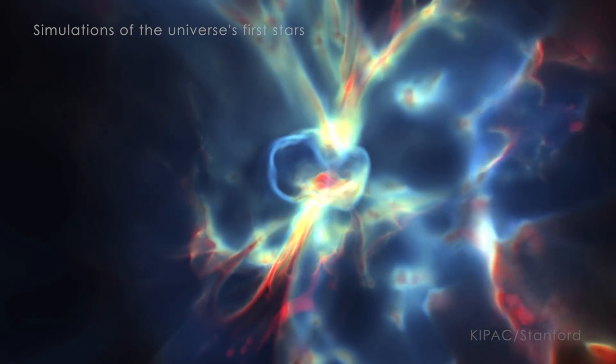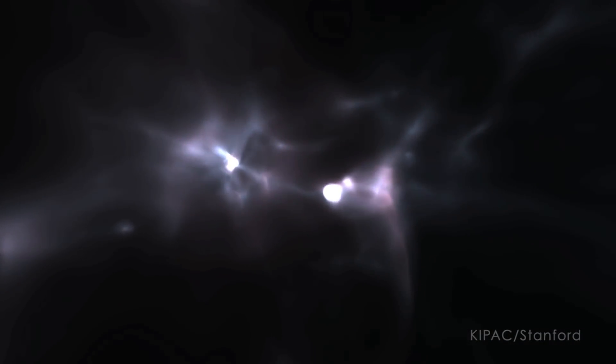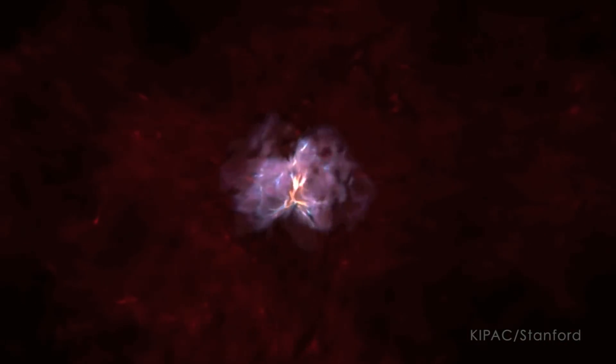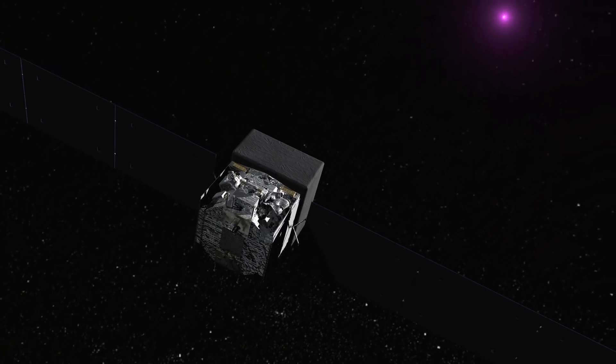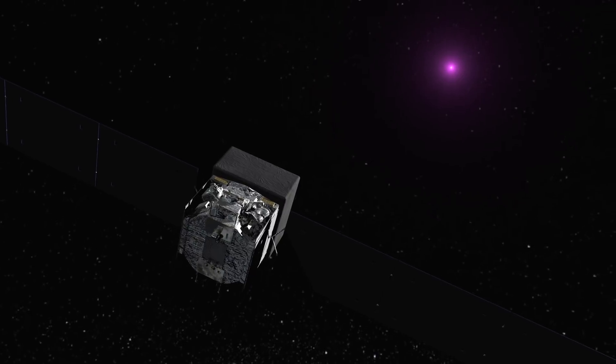Stars create most of the light in the universe, and many of its heavy elements like silicon and iron. Understanding how our cosmos came to be depends in large part on understanding how stars evolved. Thanks to Fermi, we are one step closer.